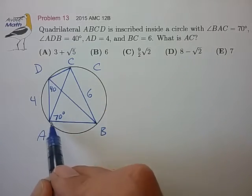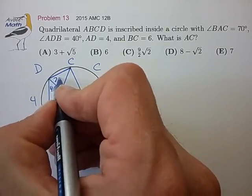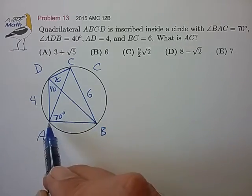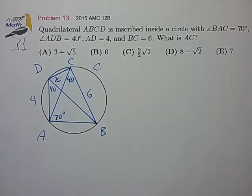So we have CAB, subtending the same arc as BDC, so we can put a 70 degree angle in there. The same is true for ADB versus ACB, so we can put a 40 degree angle over here.